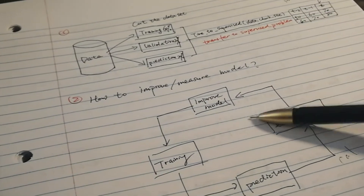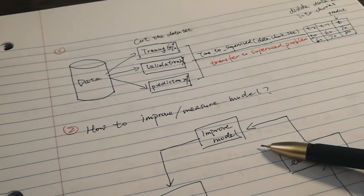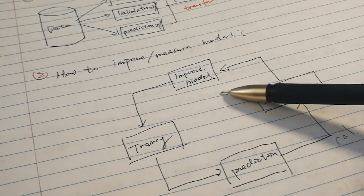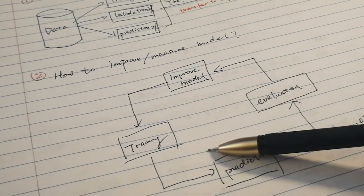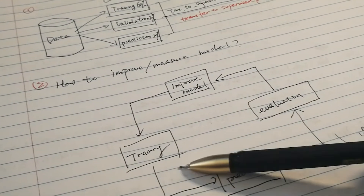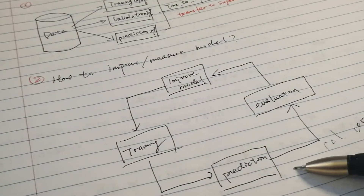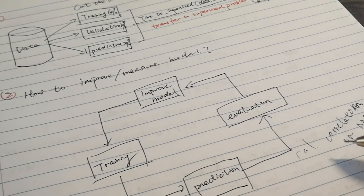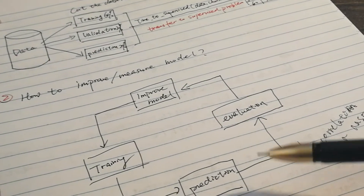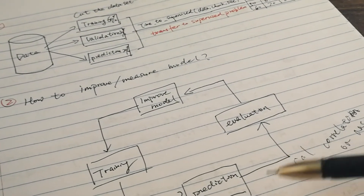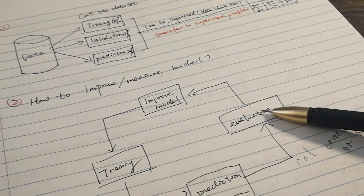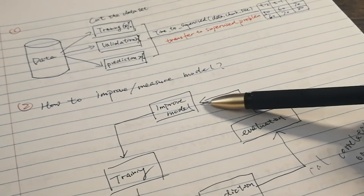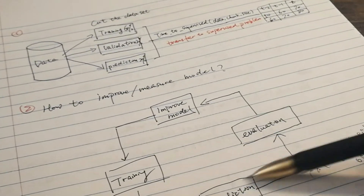The second part is about how to improve or measure our model. When we build a model, we first need to train it and use the training results to do some prediction. Then we can calculate the mean square error and correlation between the predicted data and the real data. Then we can do the evaluation and use this result to improve our model. And here is the loop.